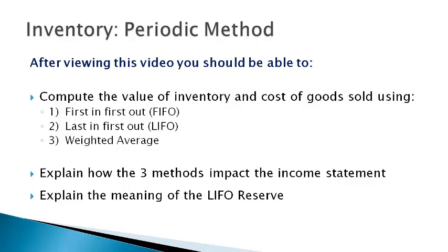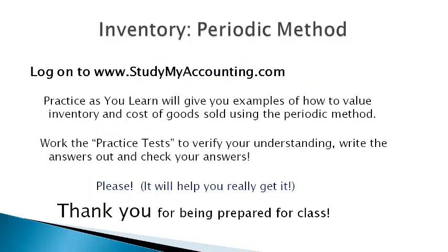After viewing this video, you should be able to compute the value of inventory and cost of goods sold using First In First Out (FIFO), Last In First Out (LIFO), and weighted average, and explain how the three methods impact the income statement and the meaning of the LIFO reserve. Please go to StudyMyAccounting.com and work through practice examples of how to compute inventory values using the three methods under the periodic method. Then work the practice test, write out your answers, and check your understanding against the answers provided. Thank you for being prepared for class.